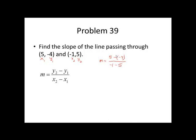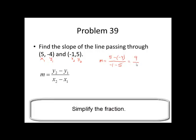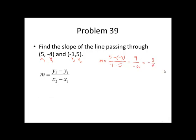To simplify, whenever we see this situation, subtracting a negative, it's the same as addition. So the numerator is 5 plus 4, or 9. The denominator, negative 1 minus 5, is negative 6. And we reduce this to be negative 3 halves.